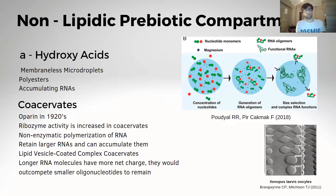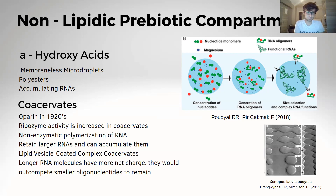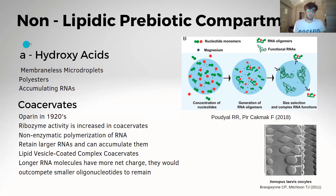Now for non-lipidic prebiotic compartments. Alpha hydroxy acids create membranous micro-droplets. They are produced with amino acids and create membranous micro-droplets that enable polymerization of polyesters, which assemble into vesicles. It has been observed that alpha hydroxy acids can accumulate RNAs, which is very important.